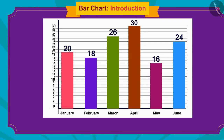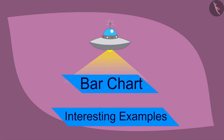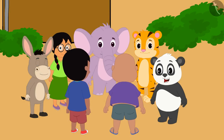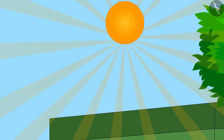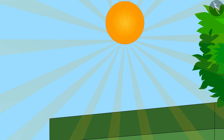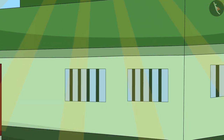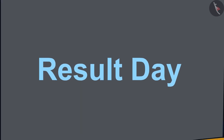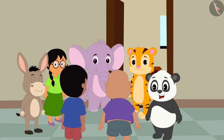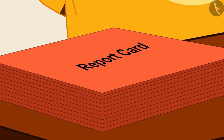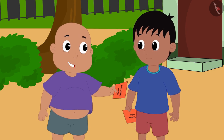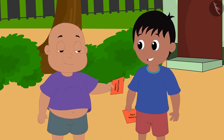Hello children. In the previous video we learned about bar charts. In this video we will learn more about it through some interesting examples. The exam is over and summer vacation is about to begin, but before that comes an important day: result day. Today all the children have come to school to get their report cards. Look Raju, I got such good marks! I too have got very good marks, Babloo.